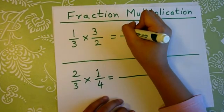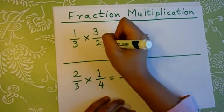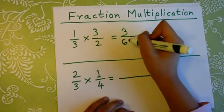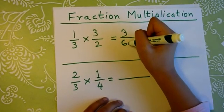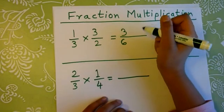1 times 3 equals 3, and 3 times 2 equals 6. This could be your answer, but this could be simplified even more.